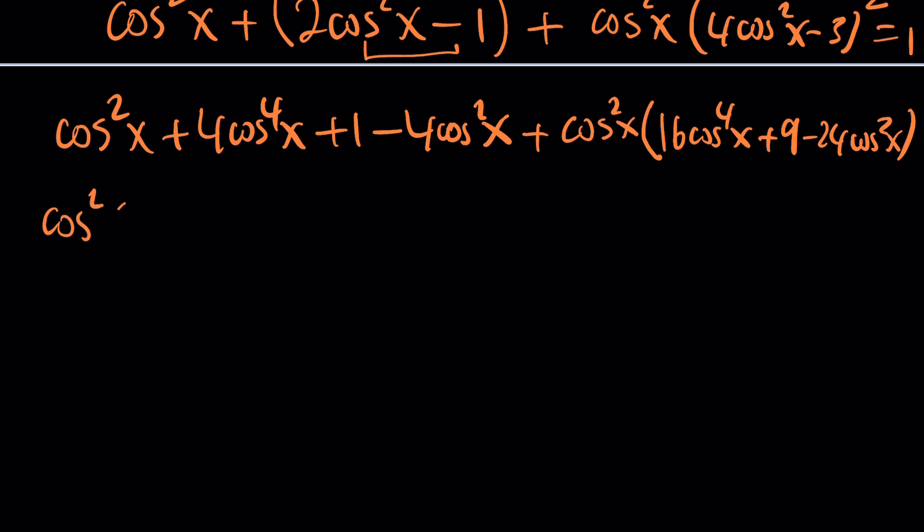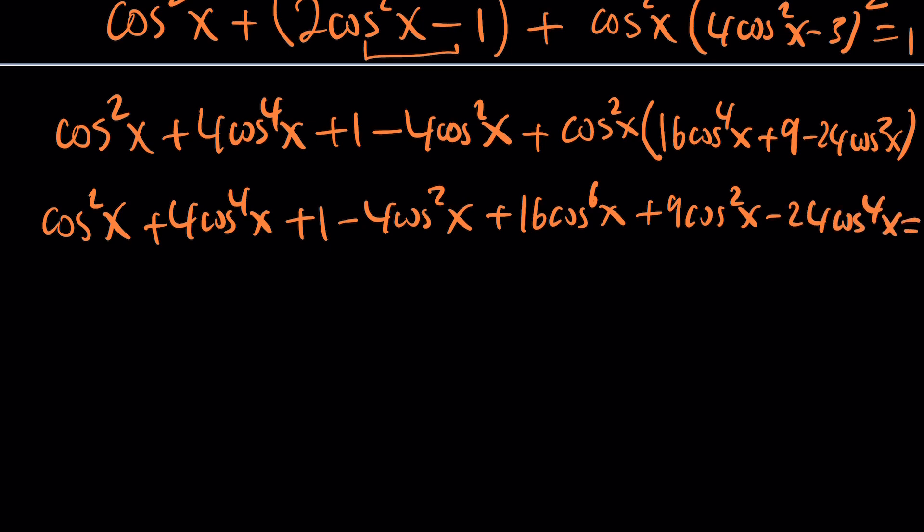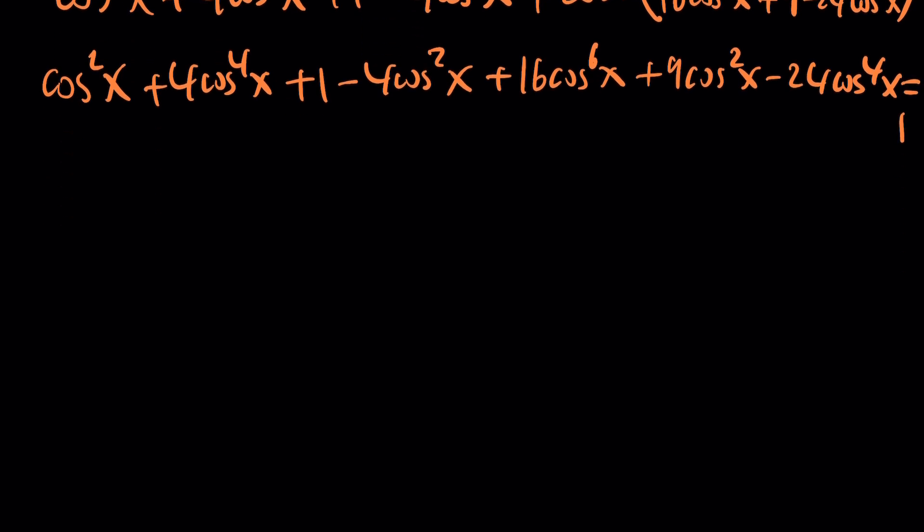Now let's go ahead and distribute cosine squared of x. We get 4 cosine to the fourth power plus 1 minus 4 cosine squared of x, then plus 16 cosine to the sixth power, plus 9 cosine squared of x minus 24 cosine to the fourth power, and this equals 1.